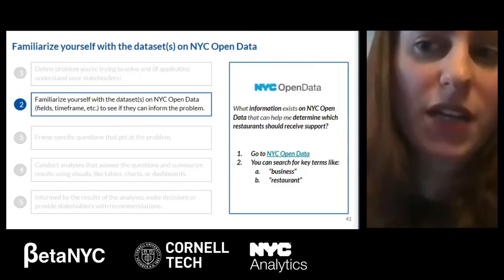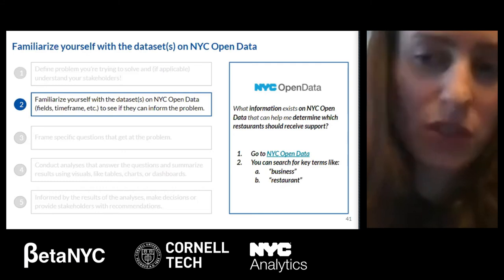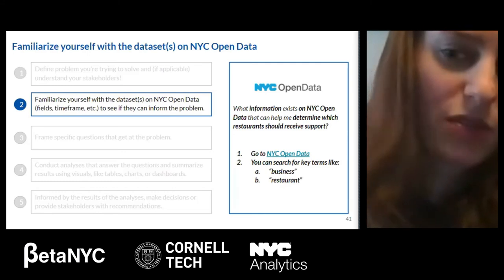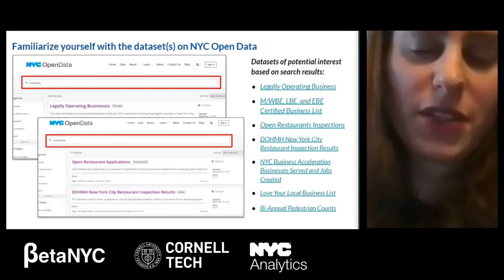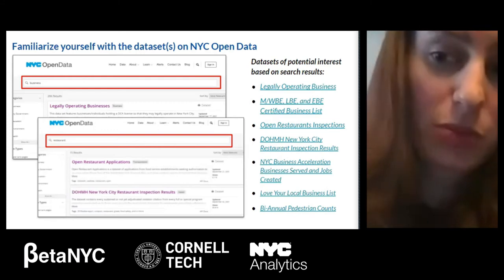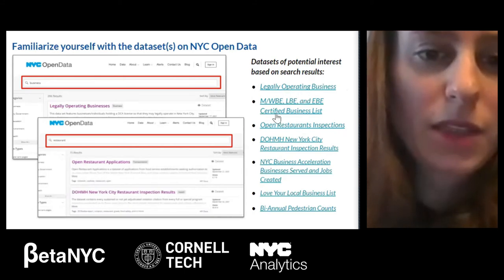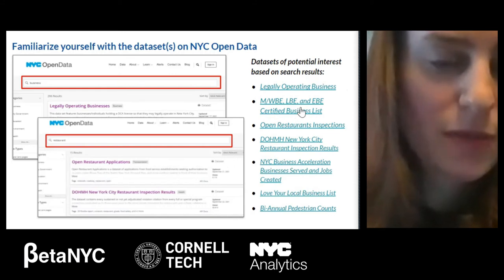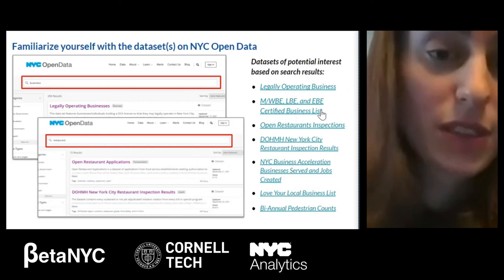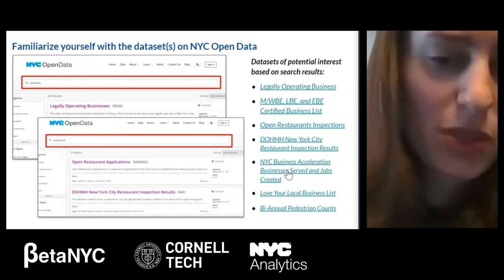To use NYC Open Data to support this work, you'd start by seeing which datasets exist that can inform the problem. Go to the NYC Open Data website and search for key terms like 'business' and 'restaurant.' After searching, you'll see a list of datasets that correspond to those terms. Potentially useful datasets include a list of legally operating businesses, WBE and other certified business lists for women- and minority-owned businesses, open restaurant inspections and health inspection results, and the NYC Business Acceleration business jobs created dataset.